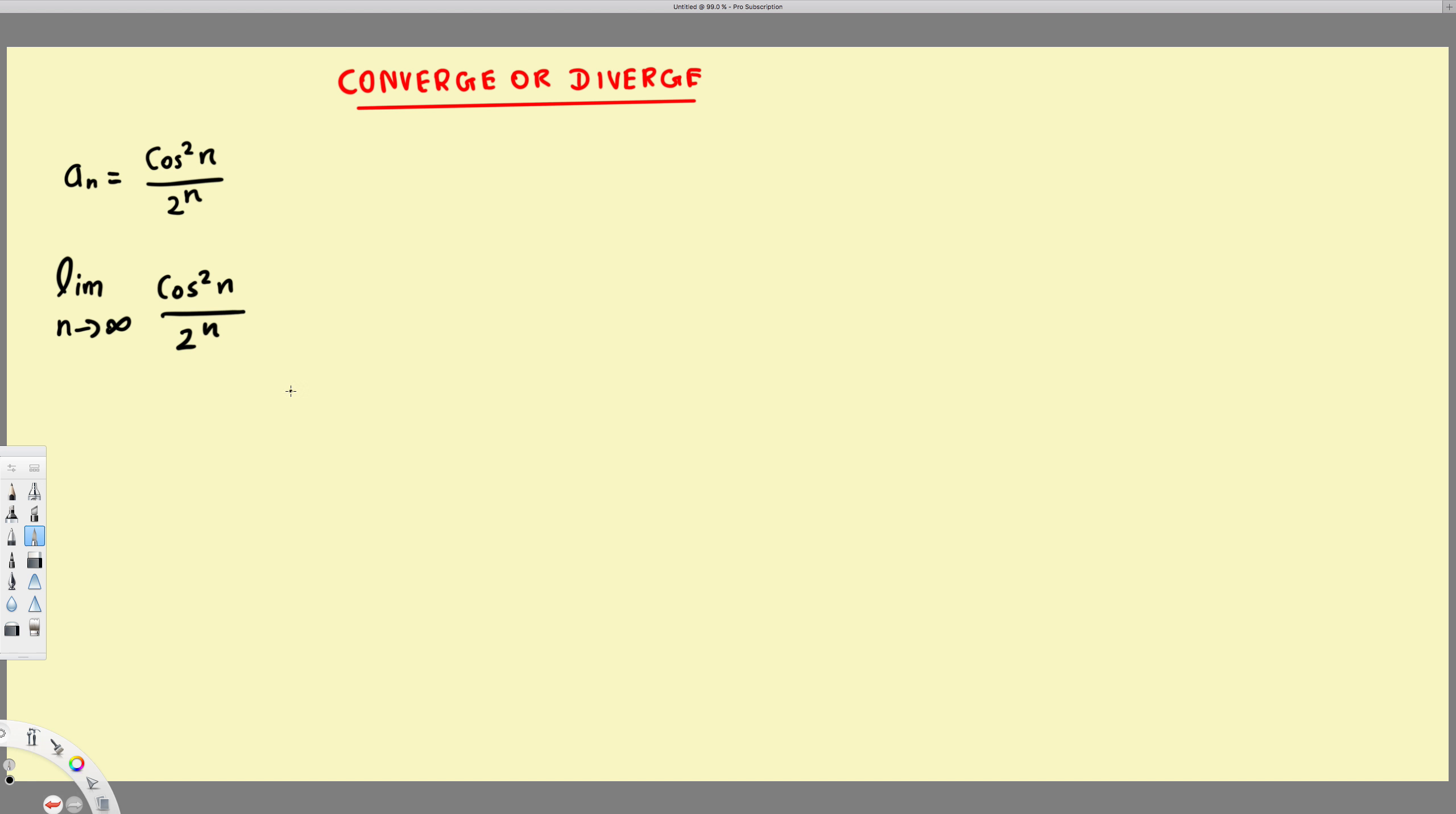And we know that whatever the cos value, it's going to be always going between negative 1 and 1. So if it's cos n, it's going to be between negative 1 and 1. So what's going to be if it's cos²n?